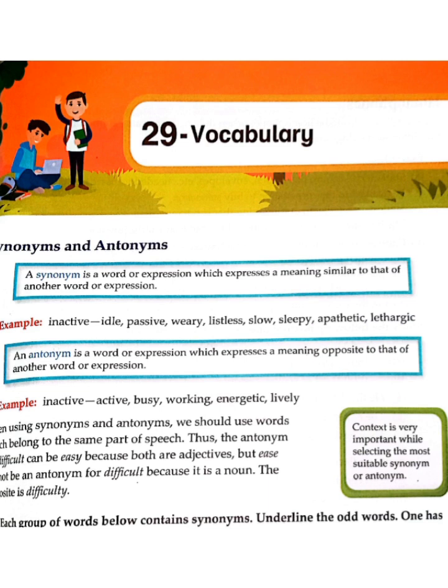If two words have opposite meanings, like happy and sad, then they are antonyms. Here in the green box it is written that context is very important while selecting the most suitable synonyms or antonyms. Context, or background, means that when you want to write a word as a synonym or antonym, you need to know the background so that you can write suitable words.